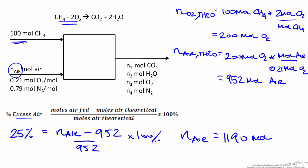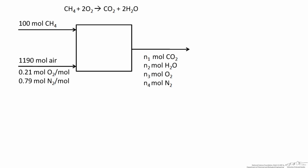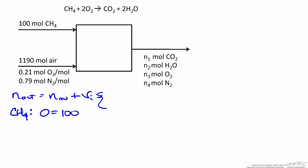Now that we know how much air we're feeding to the reactor, we can set up a system of molecular species balances to find the amounts of each component in the stack gas. The moles out equals the moles in plus the stoichiometric coefficient for species i times the extent of reaction. Applying this to methane, we know zero moles of methane leave the reactor, 100 moles go in, and the stoichiometric coefficient is negative 1 because it's a reactant. From this, the extent of reaction is equal to 100 moles.